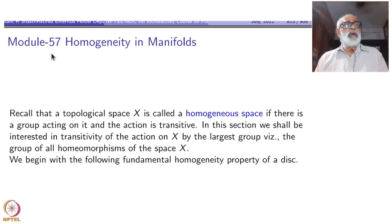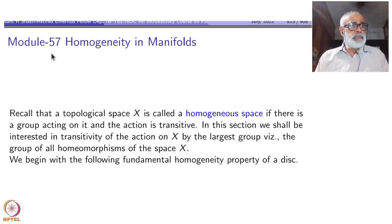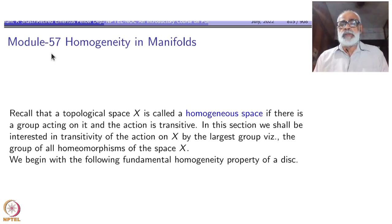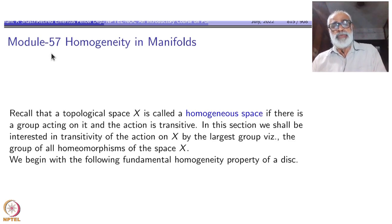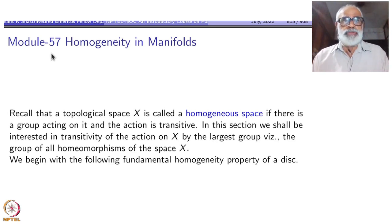Transitive means there is one single orbit: given any two points, there is a group element g which maps one point to the other — g of x equals y. In this section, we are interested in transitivity of the action on x, where the group is the largest group we can think of, namely the group of all homeomorphisms of the space.